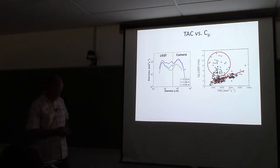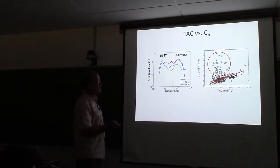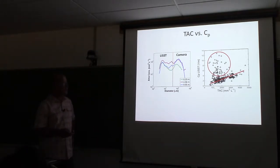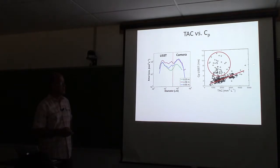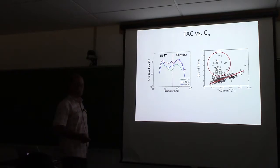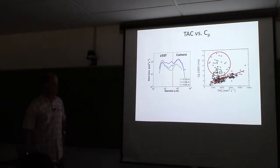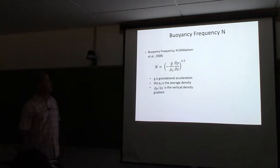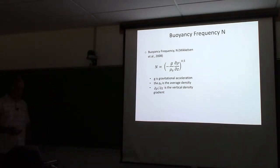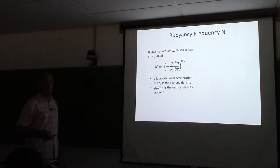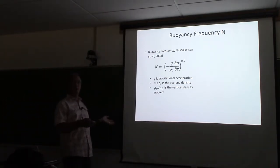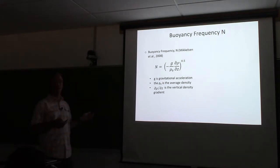Looking back at this figure, we see that some data seem to be getting a lot of attenuation when there's not much total area in suspension, while other data points show a nice linear relationship. This is the work of Jing Tao, a PhD student who was in this class a couple of years ago. Jing looked at whether those points were on or off the line and whether it depended on the buoyancy frequency.